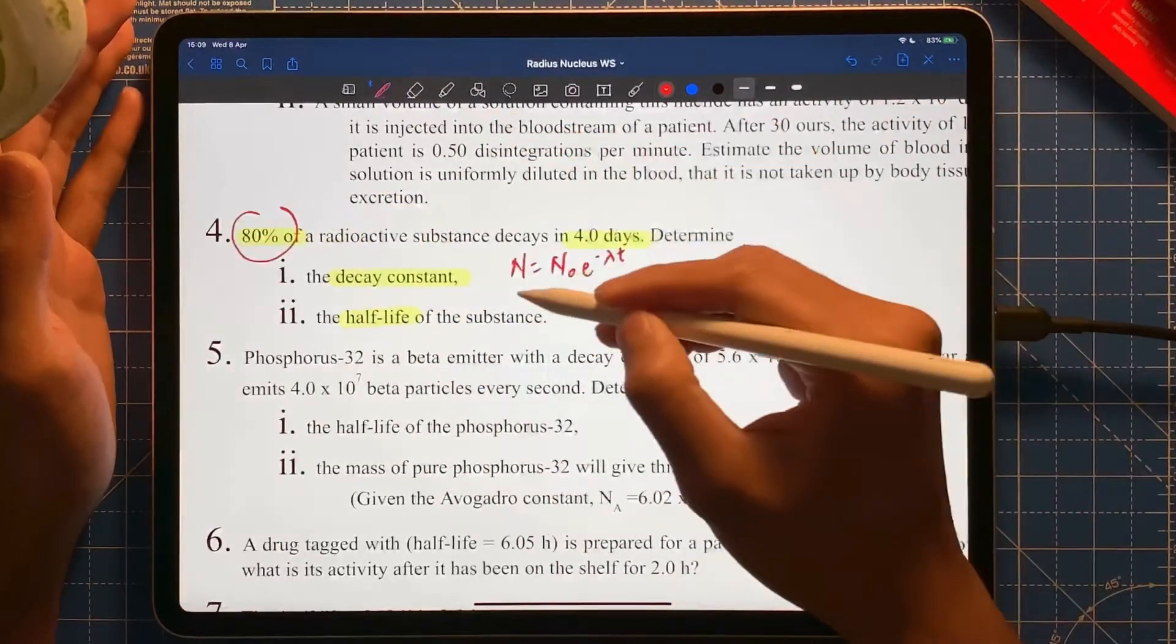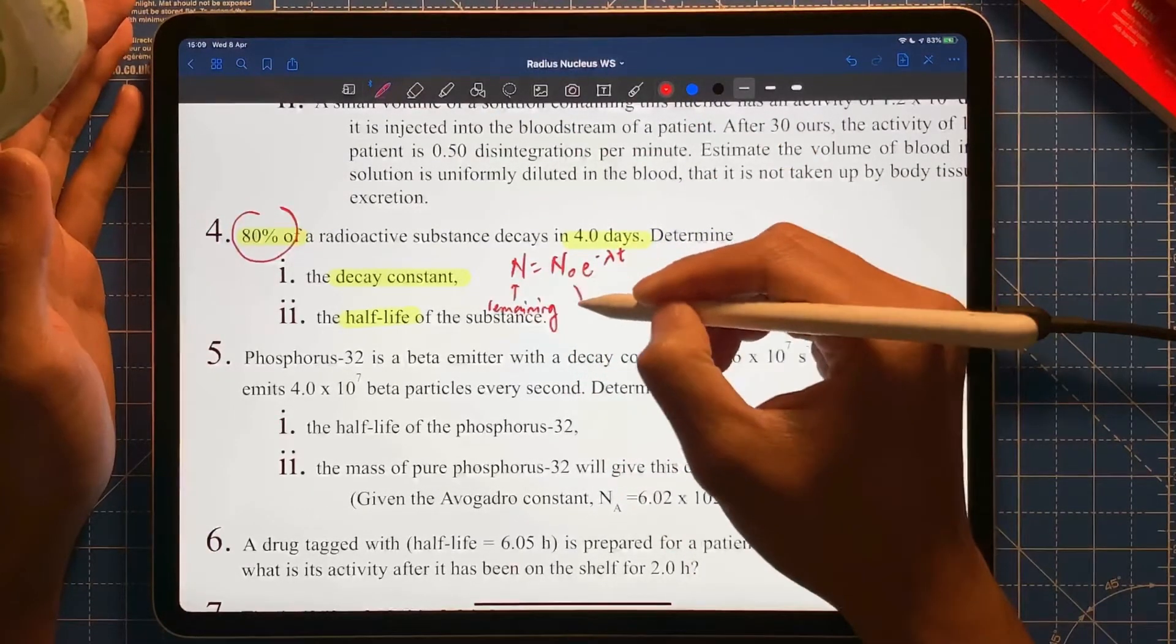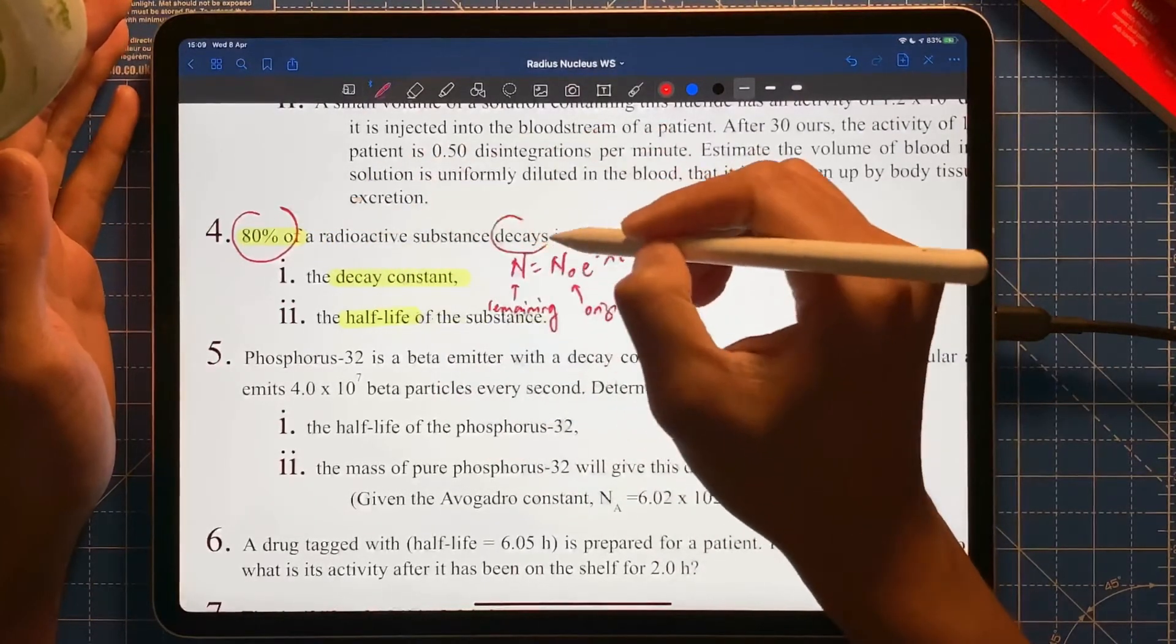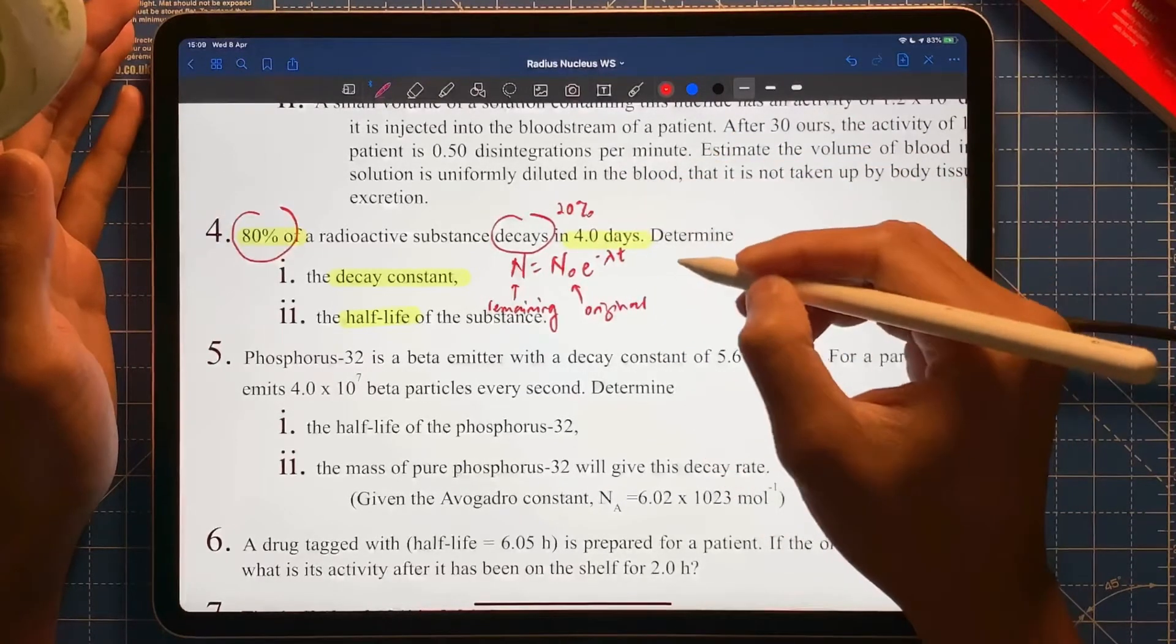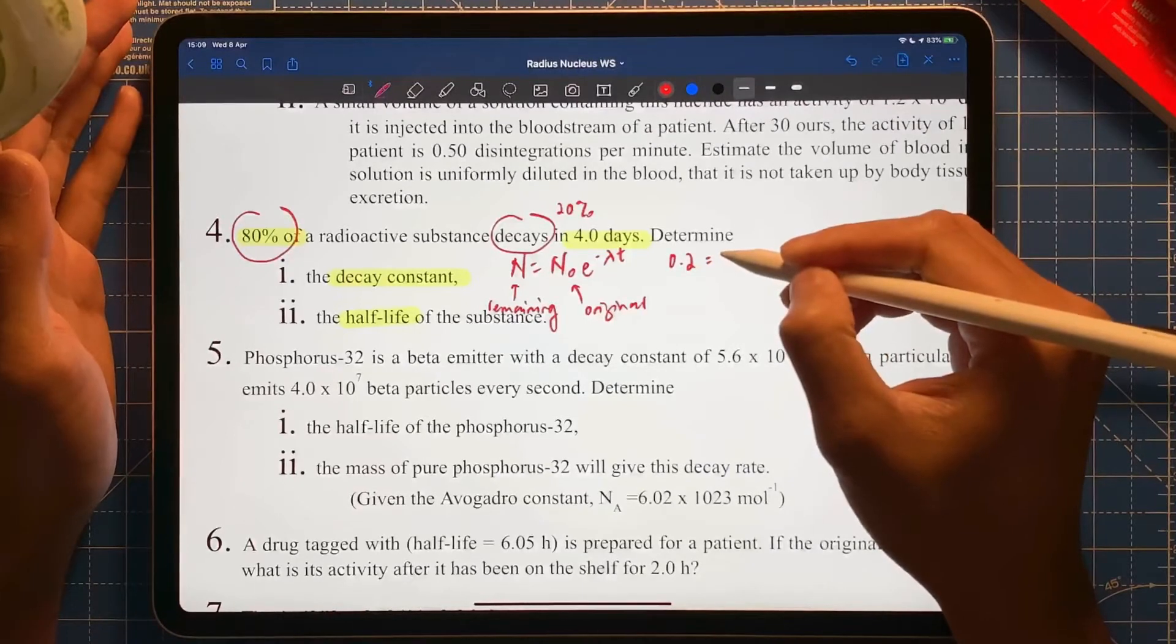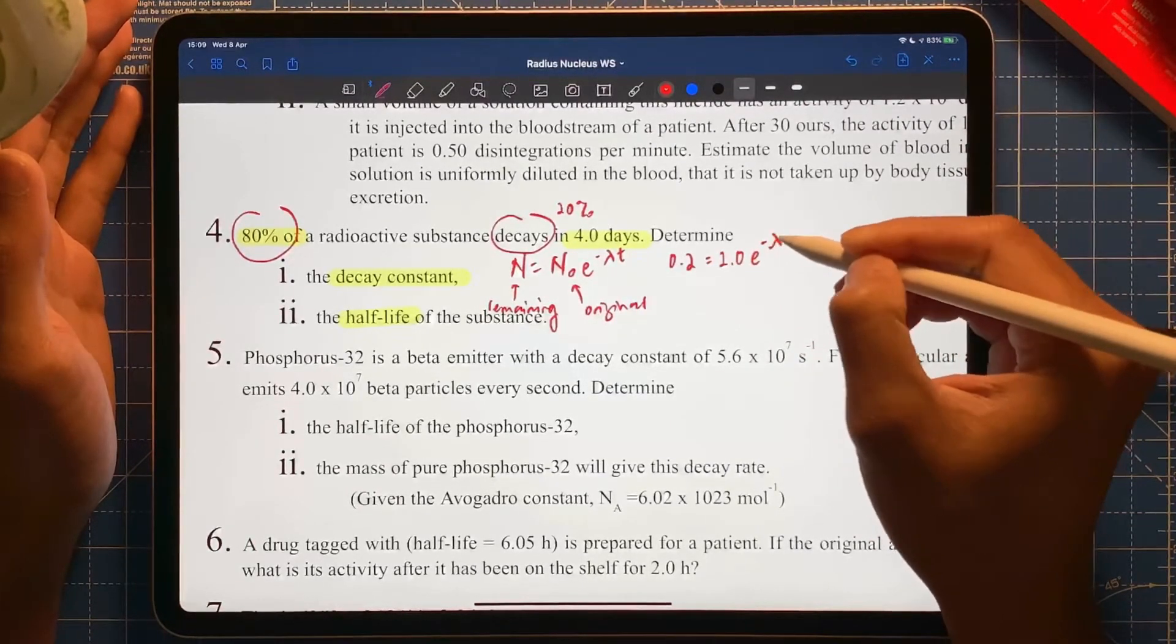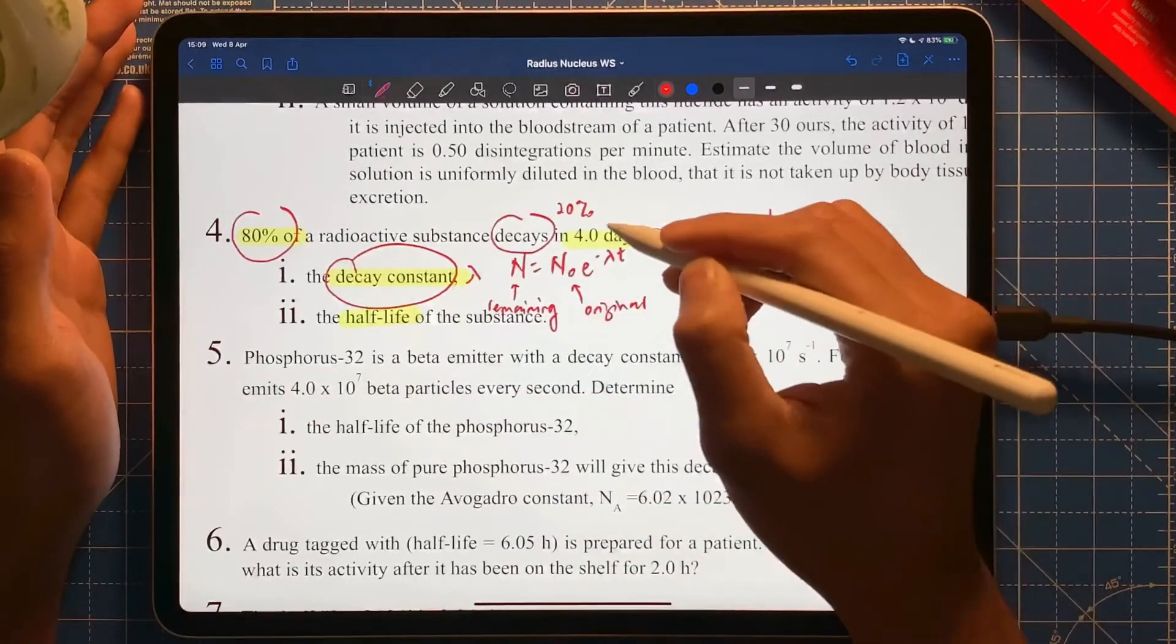The equation I need is N equals N naught e minus lambda t. So I know it's 80% and in this case means remaining. N naught is original, so if 80% has decayed, that means the remaining must be 20%, or in this case 0.2, and original must be 100% which is 1.0. e minus lambda, which is what we're looking for, the decay constant, and then time, which in this case is four days, so four.